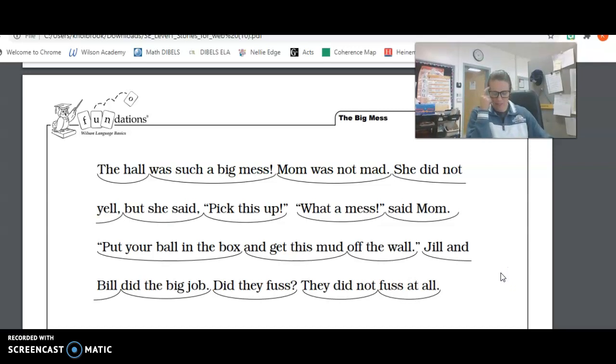So how did you do making a movie in your head? Were you able to see all of those parts happening? Good. And now let's talk about the feelings. How was Mom feeling in the beginning of the story? You're right. She wasn't mad. But how did she feel? Maybe surprised or a little disappointed at the mess? And then how do you think Jill and Bill felt when they had to clean everything up? Well, it says they didn't fuss. So they probably were just expecting it. They were okay with it. And it doesn't tell us. But how do you think Mom felt at the end of the story? I bet she was happy, too, because they cleaned it all up without fussing. I would be happy.